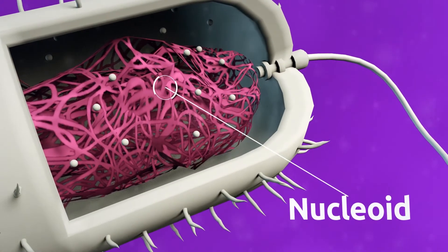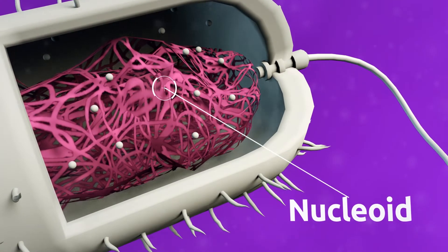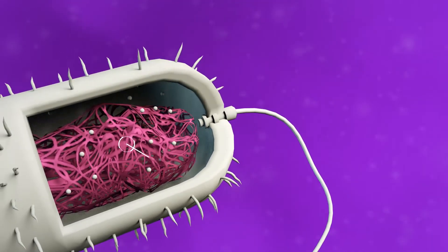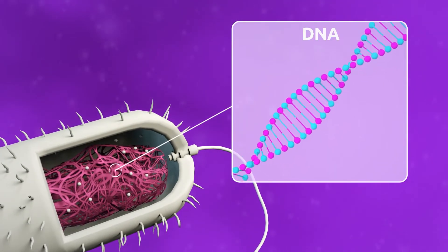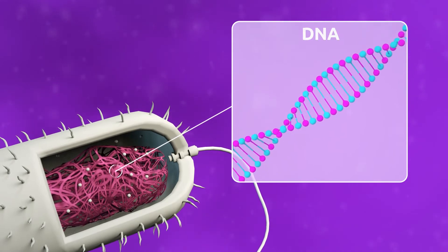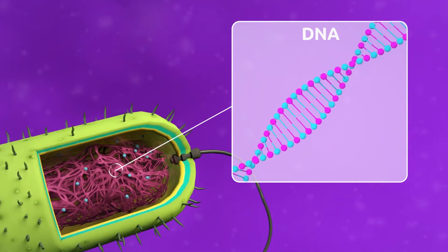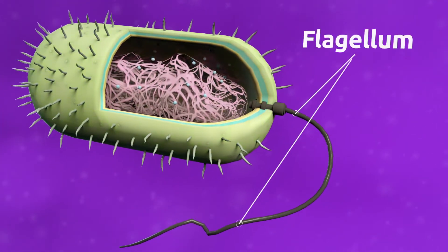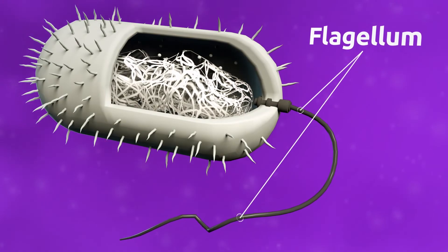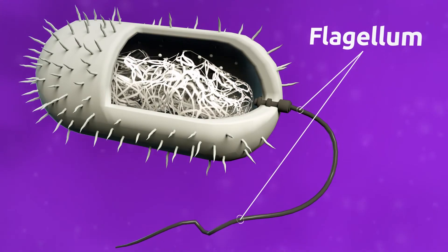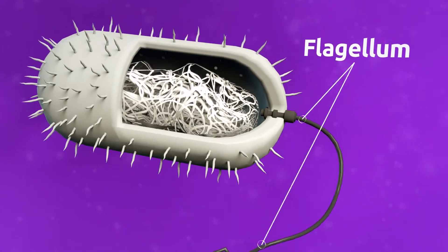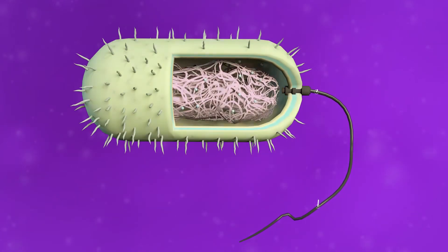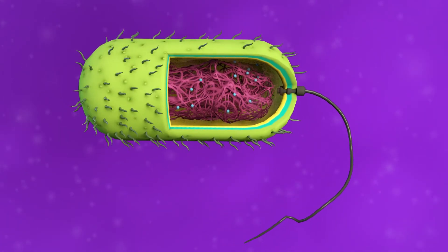The nucleoid is the part of the cell where DNA is found. DNA is formed by genes, which store the genetic information of a living being. The flagellum is found in some prokaryotic and eukaryotic cells — it's a lash-like appendage which allows a cell to move.